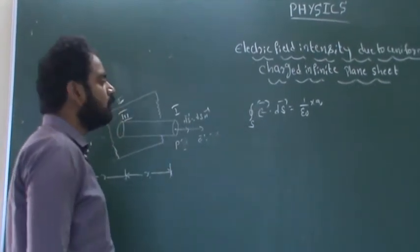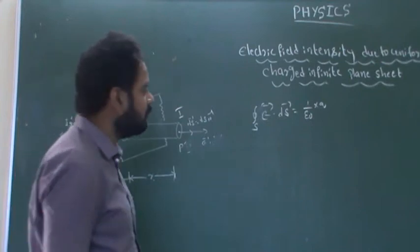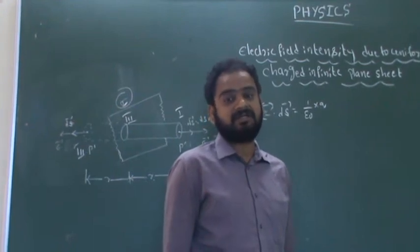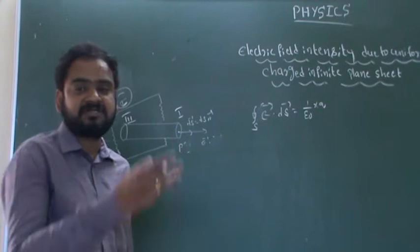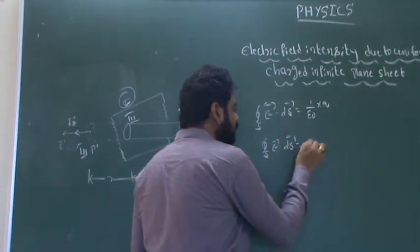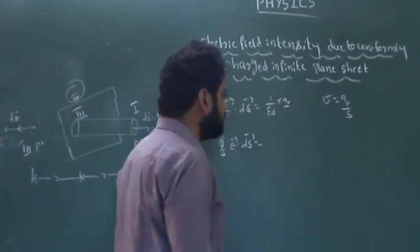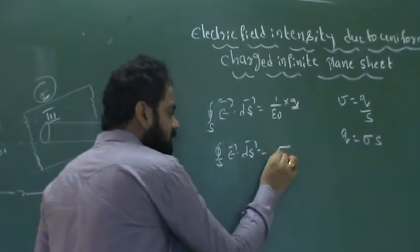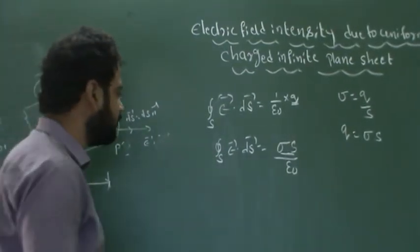Here q relates to the surface charge density. The charges are distributed on the surface, that is called sigma. You already learned in the continuous distribution of charges: linear charge density is q by l, and surface charge density is q by s, where s is the surface of the given plane sheet. So sigma equals q by s, or q equals sigma times s. Substituting into Gauss's law gives sigma·s by epsilon naught.